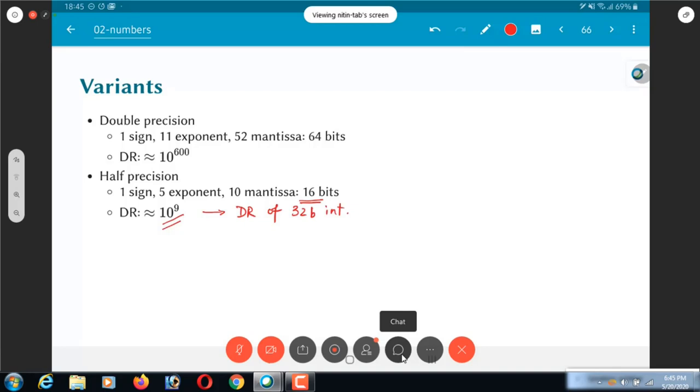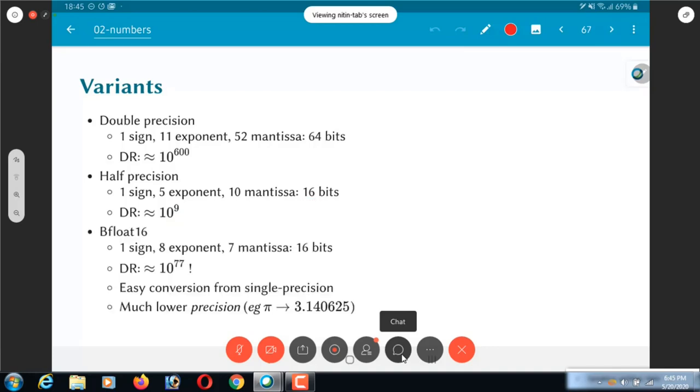So, effectively what it means is, if you could have something which could have been represented using 32-bit integers, which has a dynamic range of 10 power 9, you could now handle it with 16-bit floating point. There are other variants. There is something called the B-float 16, which is something that was used by Intel. They introduced it sometime last year or so. This once again has the same dynamic range, 10 power 77, as 32-bit floating point. But it uses only 16 bits. The problem is it has much lower precision, that is to say the smallest values that can be resolved are spaced much further apart. Example, you can't really represent pi even to 4 decimal digits.